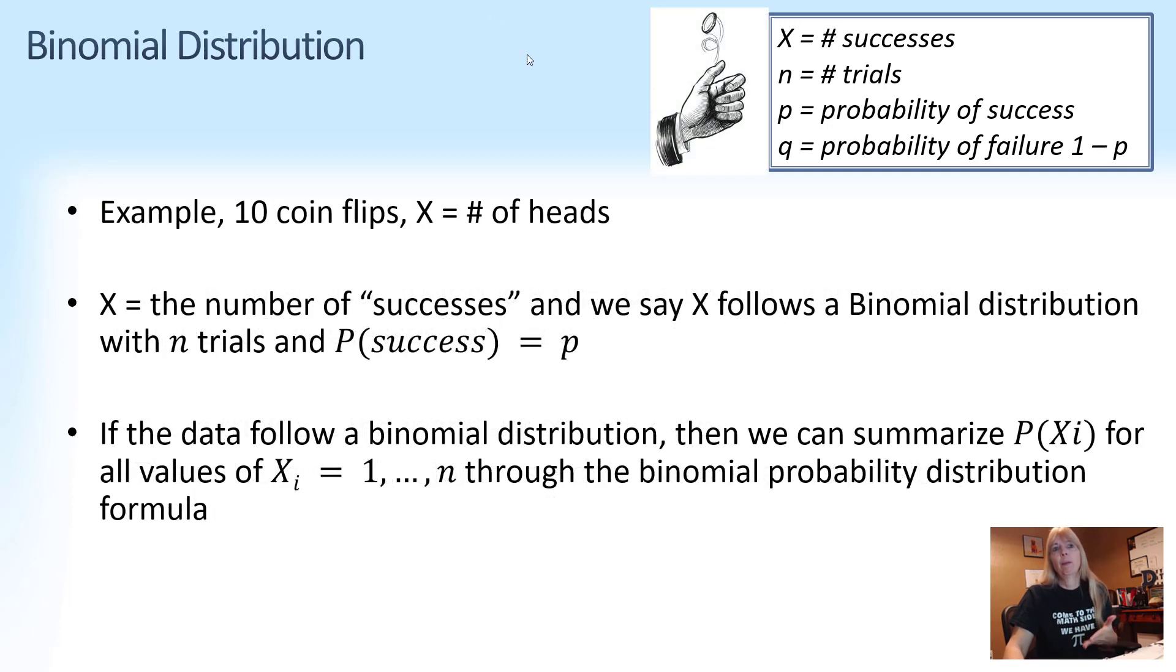And the probability of success stays the same. Every time you flip a coin, the probability stays the same as one half. And so that's what this is showing here. For example, if I flip a coin 10 times and I want to record the number of heads, then we would call that a success.